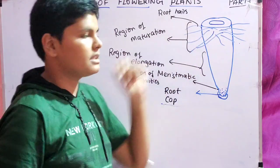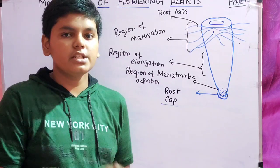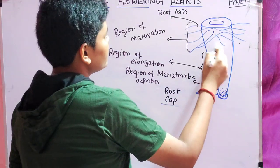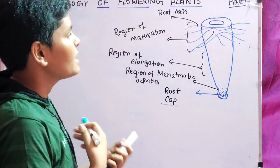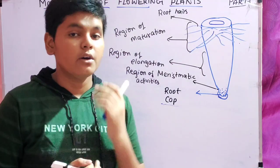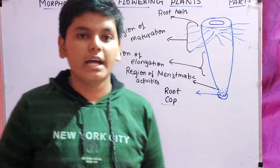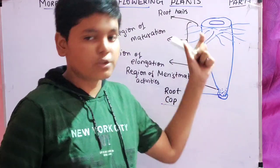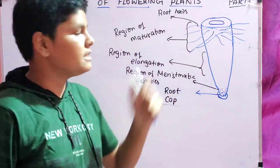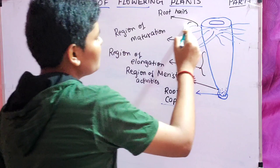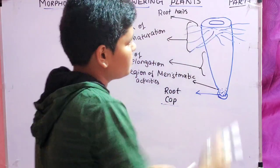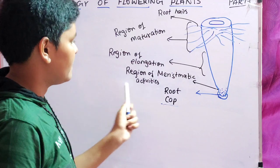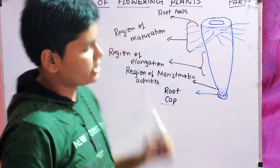Region of maturation: in this region the cells are differentiated and matured. The cells in the elongation region are a little bit immature, but after entering the maturation region they start becoming matured. Matured cells start having epidermal cells which produce root hairs. Root hairs increase the surface area, allowing roots to reach far and pick up water and minerals, which are transported through the vascular bundle — xylem and phloem.